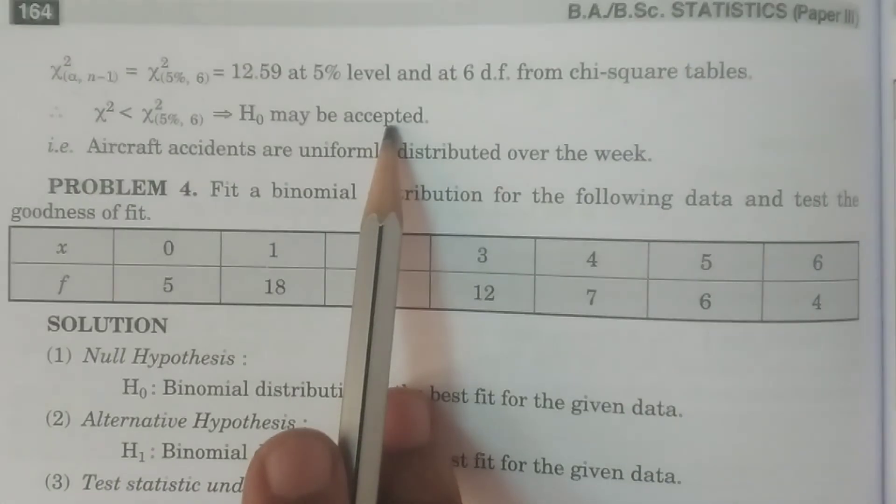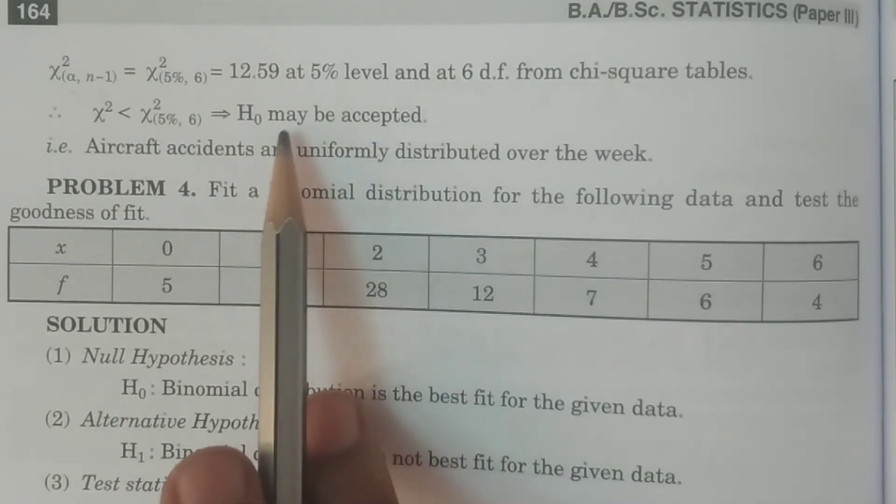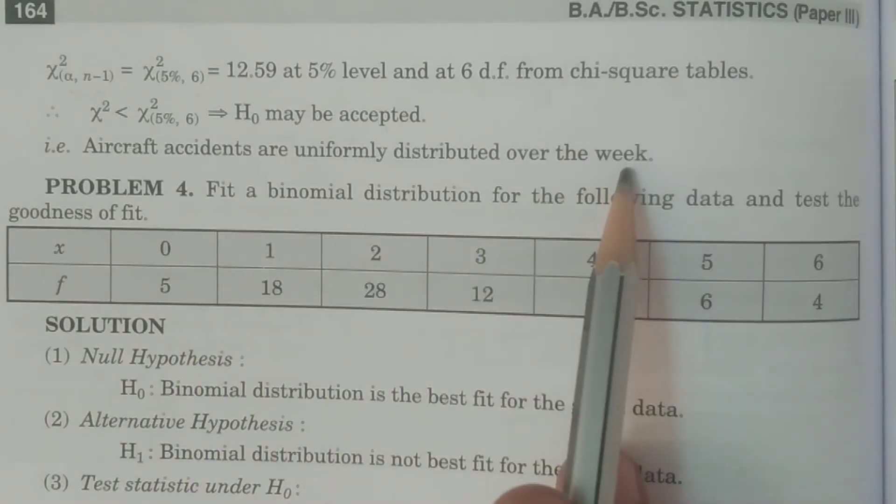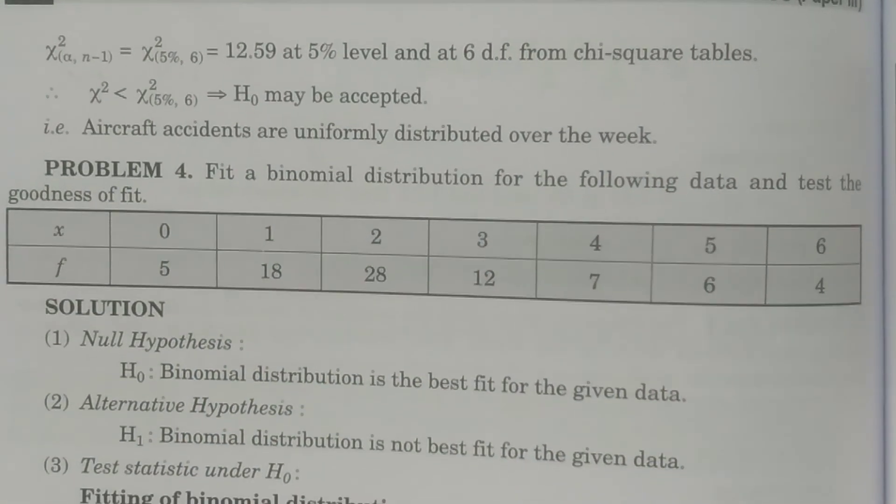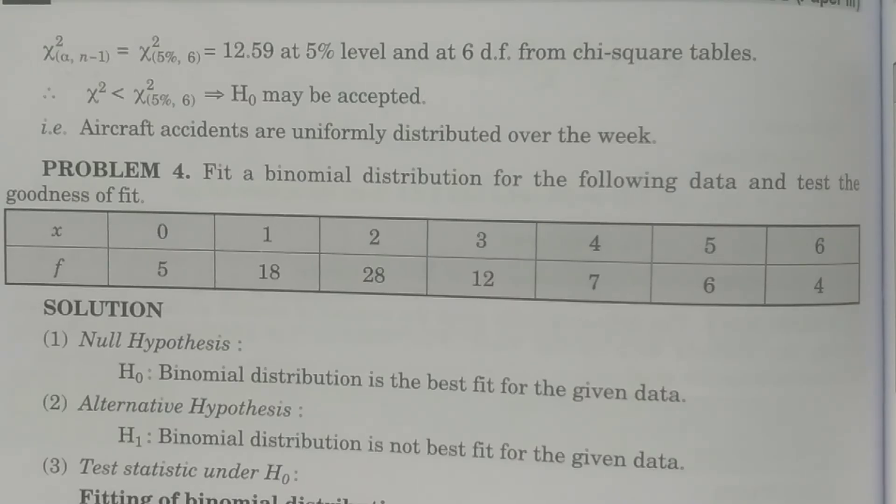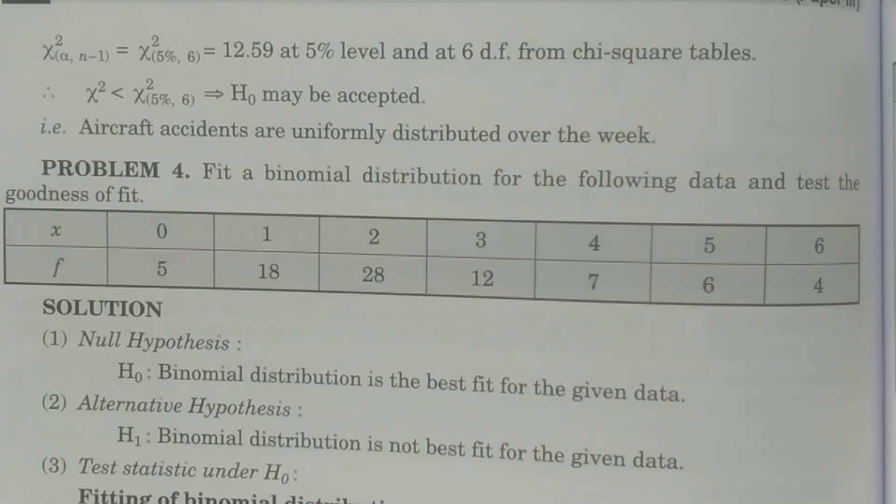H naught may be accepted. That is, what is H naught? Aircraft accidents are uniformly distributed over the week. So this is very simple problem. The chi-square test of goodness of fit. This test is so simple. Thank you. Thank you so much.